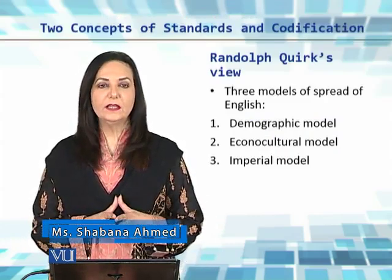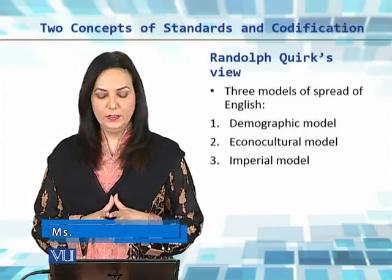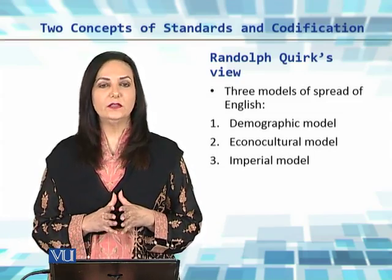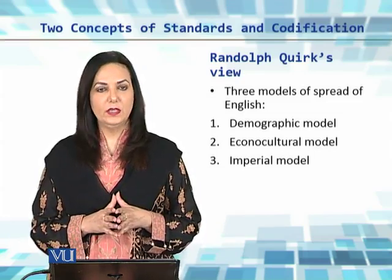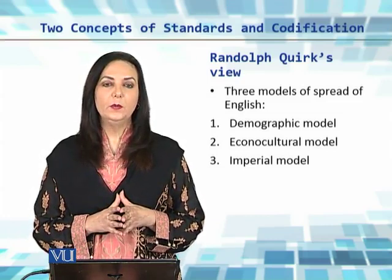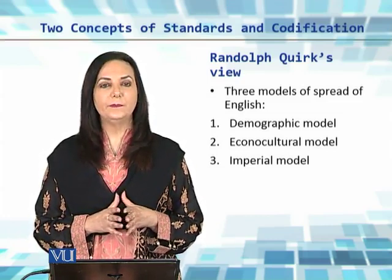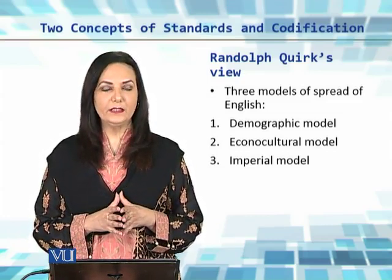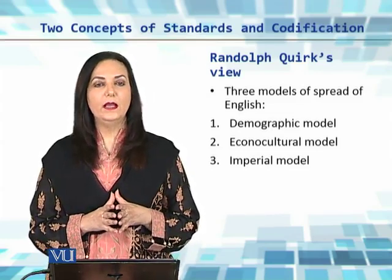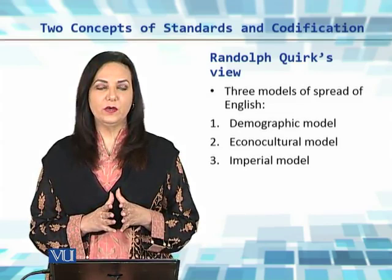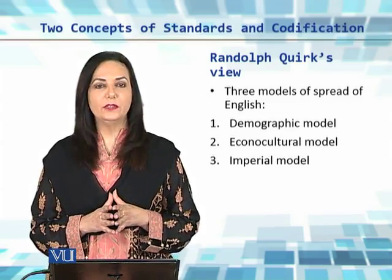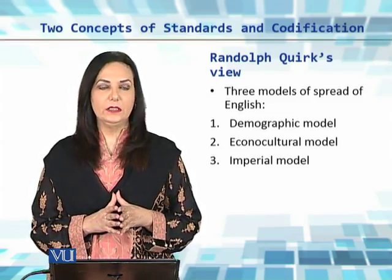First, let's take a look at Quirk's view. Quirk discusses the spread of English under three models. The first is what he calls the demographic model, which is exemplified in the spread of English to North America and Australia as a result of migration of a large number of people from Britain to these parts of the world.